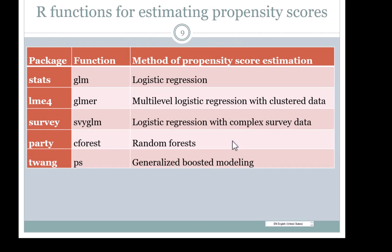Here are some R packages and functions you can use to estimate propensity scores. Use GLM for logistic regression in the base stats package. If you have multi-level data, you could use the lme4 package and the function glmer. If you have sampling weights, you could use the survey package and the function svyglm. For random forests, you could use the party package, though there are other packages available. For generalized boosted modeling, the TWANG package was developed specifically for propensity score analysis and you can use the ps function.